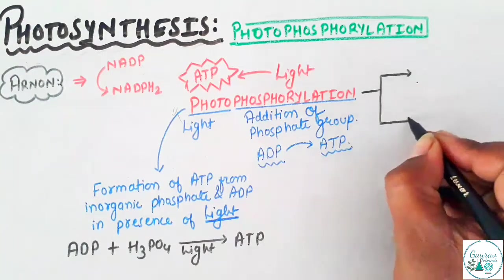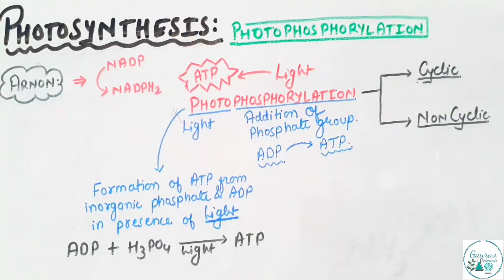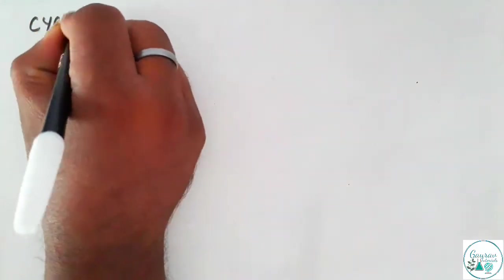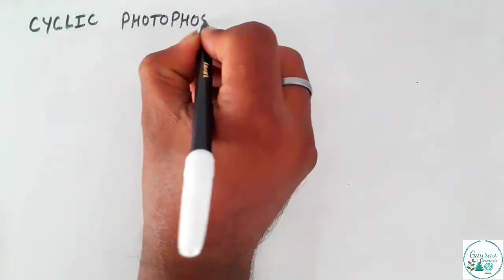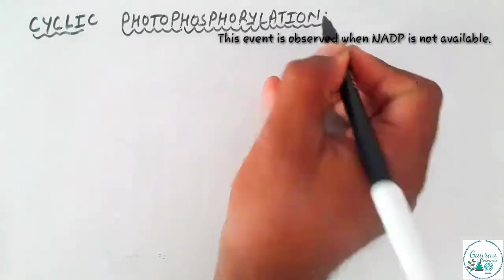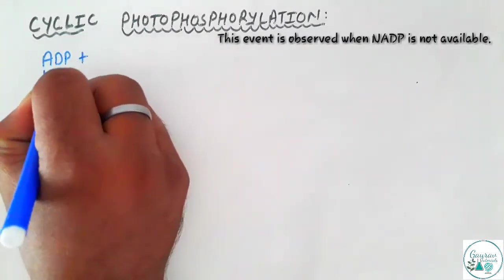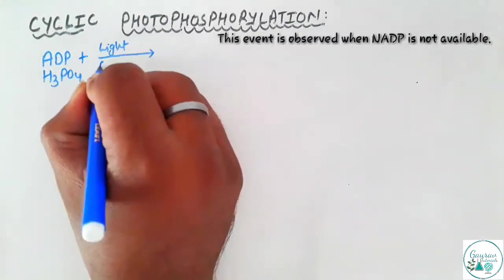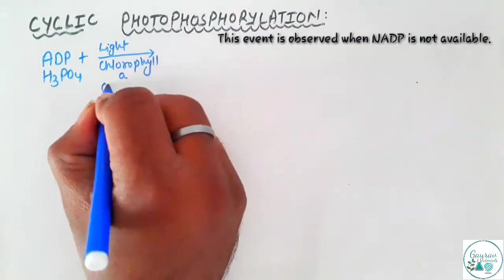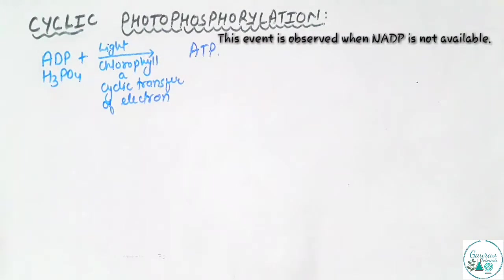Photophosphorylation is of two types: cyclic and non-cyclic. We would discuss both of these, but first we would talk about cyclic photophosphorylation. The process of cyclic photophosphorylation is observed in those plants where NADP is either scarce or not available. During this, ADP along with inorganic phosphate in the presence of light and chlorophyll A would see the cyclic transfer of electrons to generate ATP.